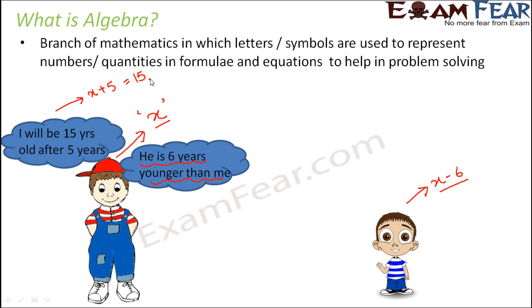So by solving this equation, we have actually built an algebraic equation. Why is this an algebraic equation? Because this equation has numbers, it has the equality sign, and it also has alphabets. So this is an algebraic equation.